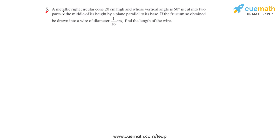Question number five: a metallic right circular cone 20 centimeters high and whose vertical angle is 60 degrees is cut into two parts at the middle of its height by a plane parallel to its base. If the frustum so obtained is drawn into a wire of diameter 1/16 centimeters, we have to find the length of the wire.